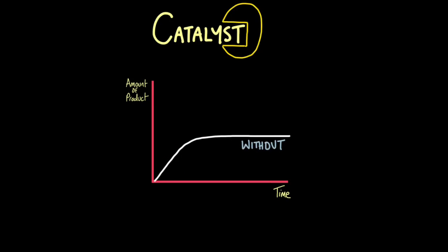What about when we use a catalyst? Without a catalyst, this is the normal rate of reaction. Catalysts speed up rates of reaction significantly, giving a much steeper climb that levels off at the same point. Adding a catalyst doesn't increase the amount of product formed — we still have the same quantity of reacting molecules to start off with.